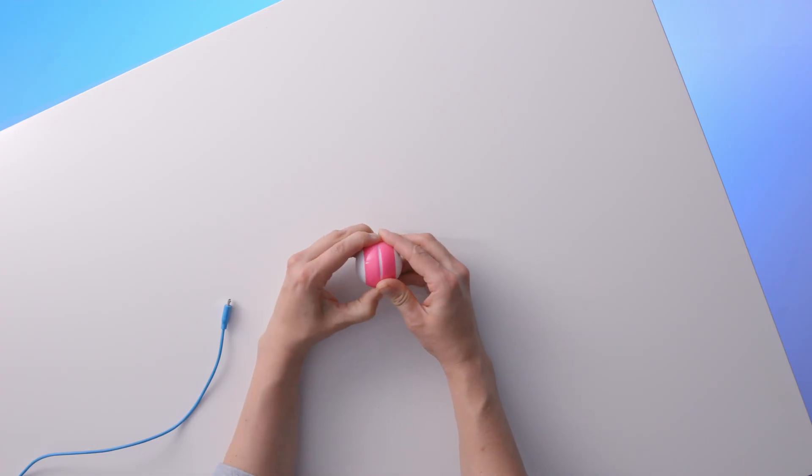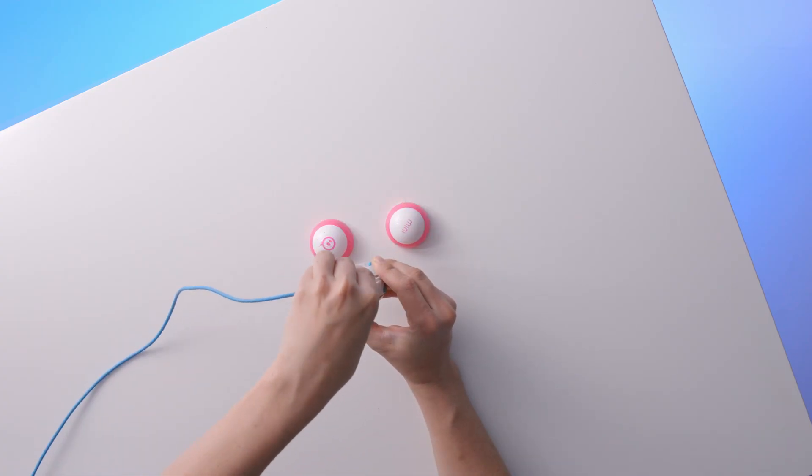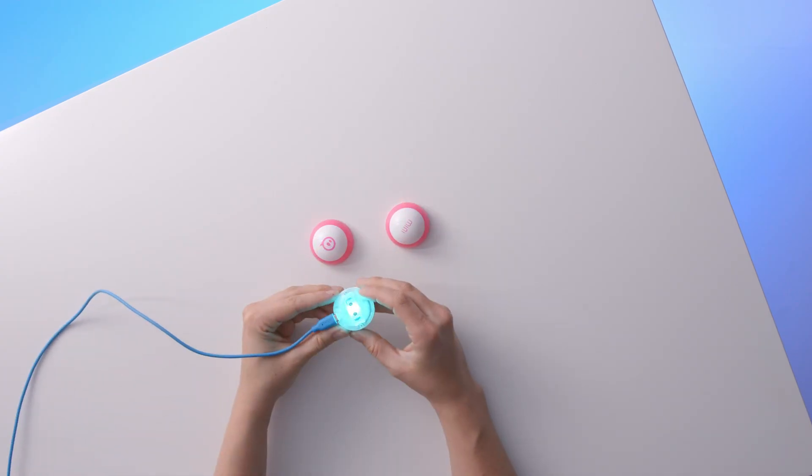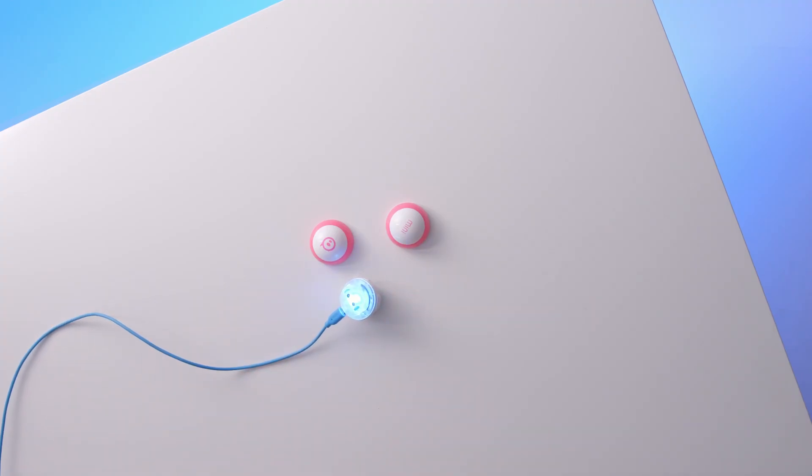To charge your mini, squeeze the sides of the outer shell and it will pop open. Plug in the micro USB and the breathing blue light will let you know that your mini is charging. When the light turns to a solid green, then it's fully charged.